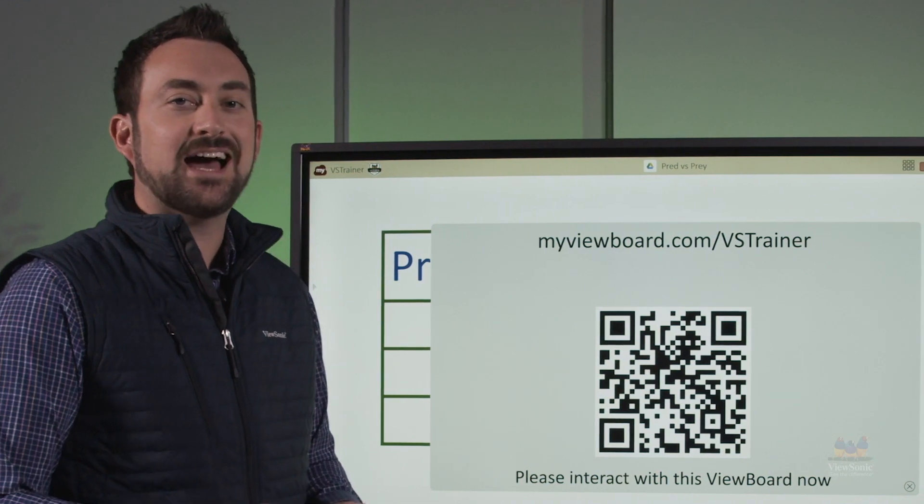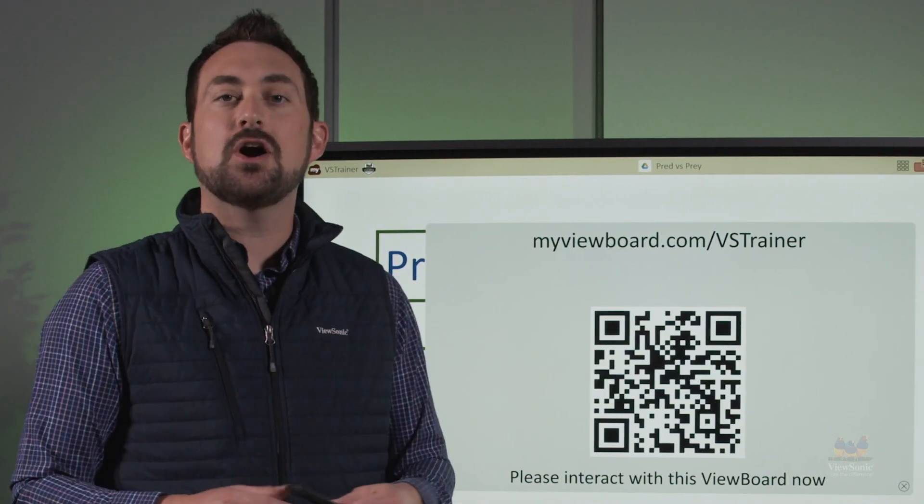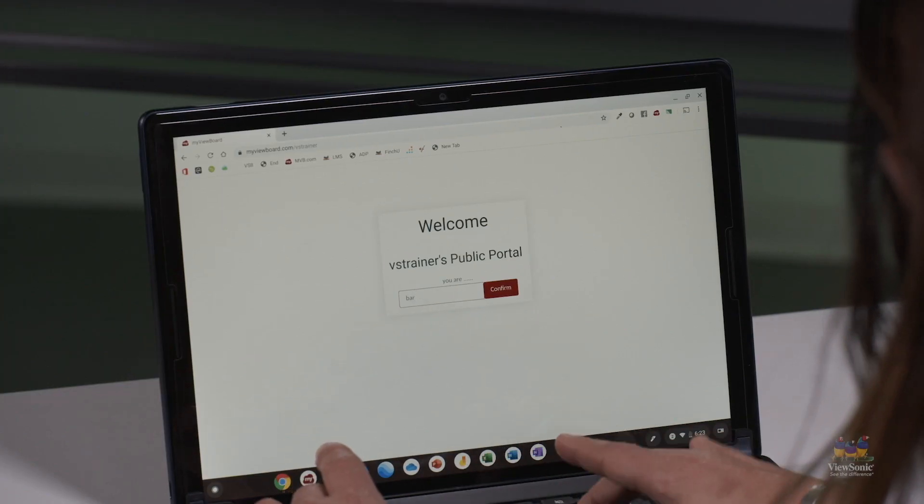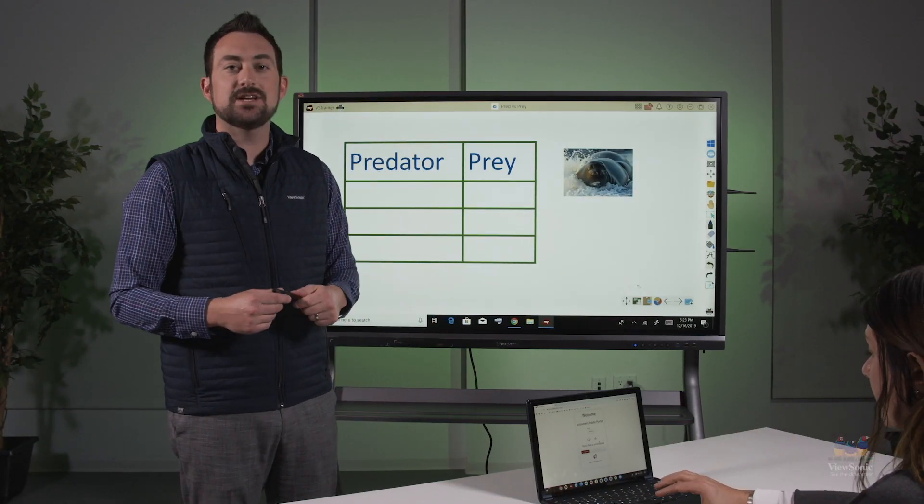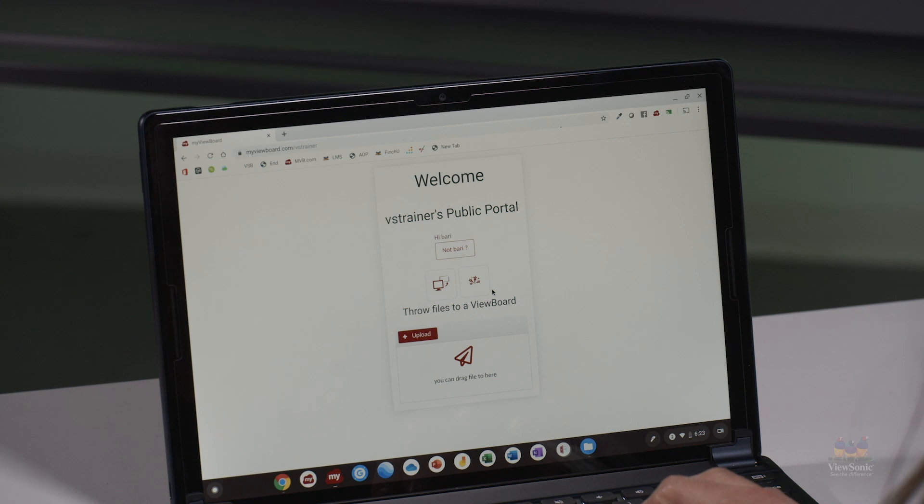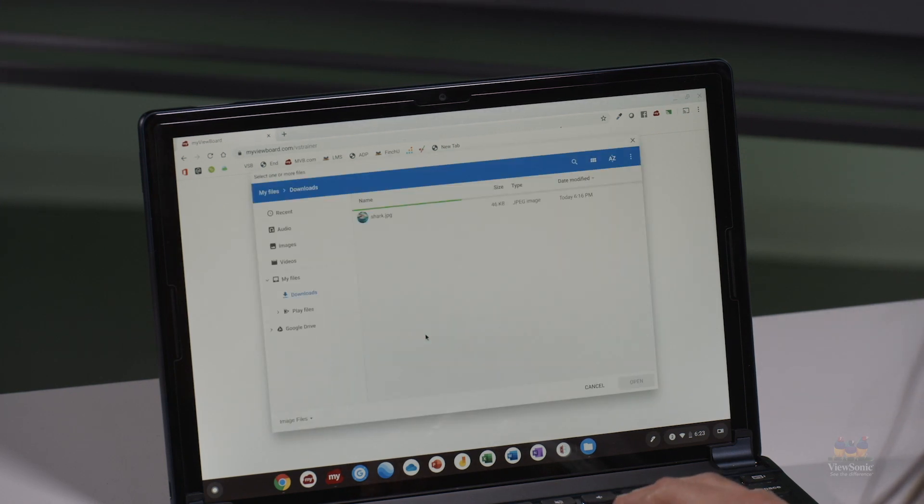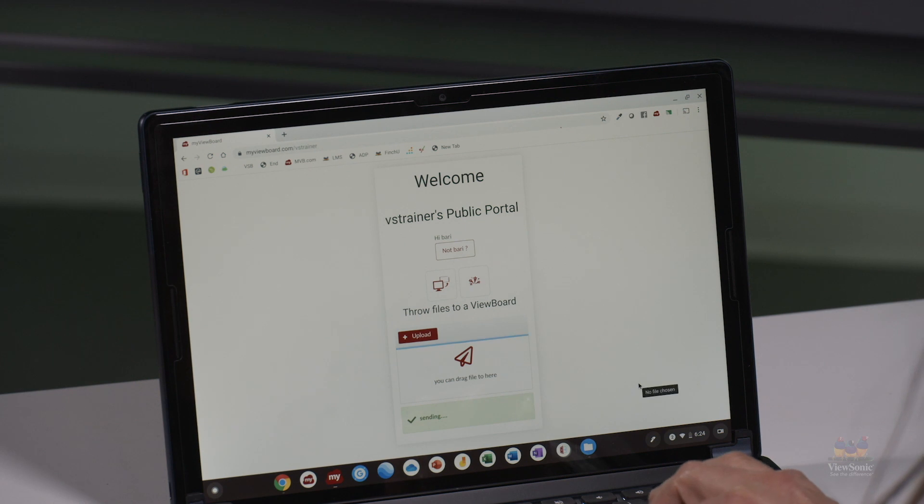Once students access that address, they'll be prompted to type in their name. From here in this activity, I'm going to ask students to throw an image. What they're going to do on their device is locate the paper airplane icon where there's an upload link. They're going to click upload and choose an image from their device to throw to the panel.